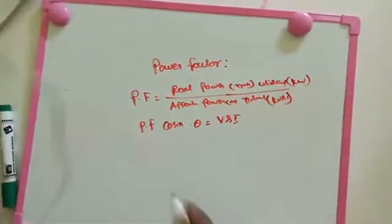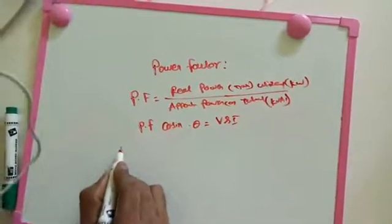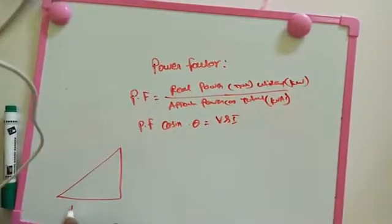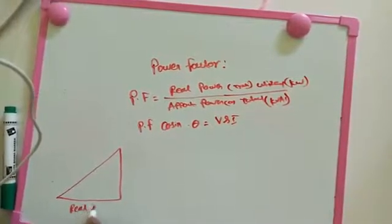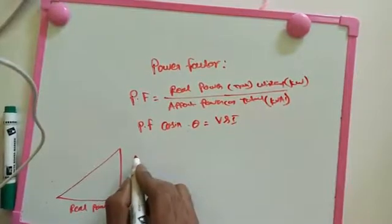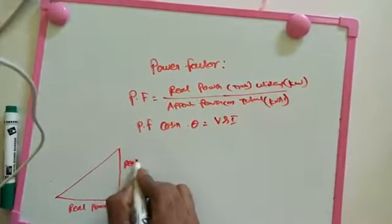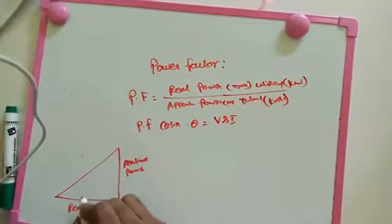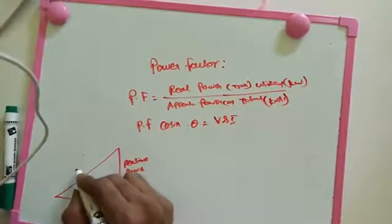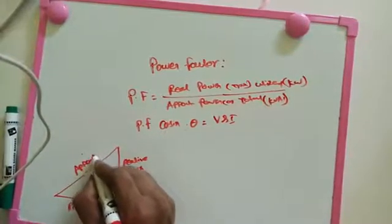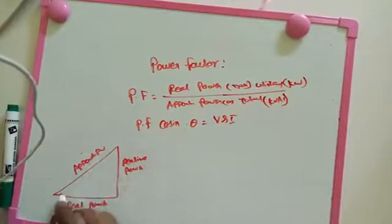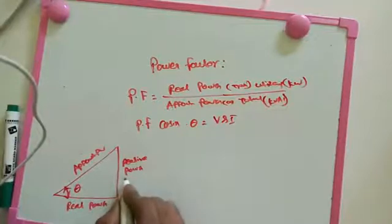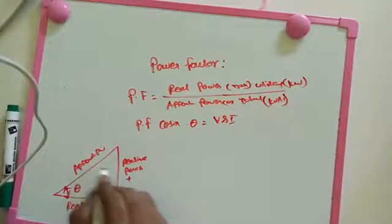Now we are going to represent the power factor using a triangle. This side is real power, this one is reactive power, and the sum of real power and reactive power is called apparent power. The angle between real power and apparent power is called the power factor angle.